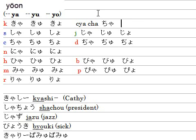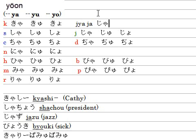And for ja, ju, jo — you can type J-Y-A for ja, but you can also simply type J-A for ja. So either J-Y-A or J-A works. I think J-A is easier.